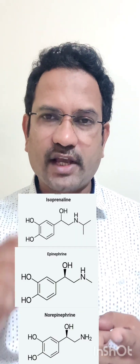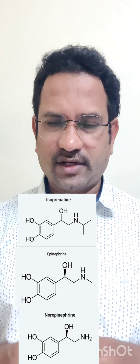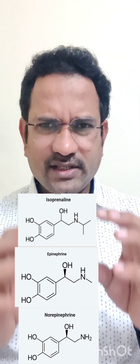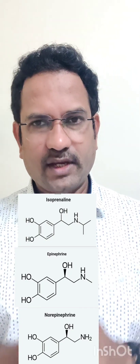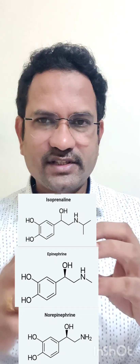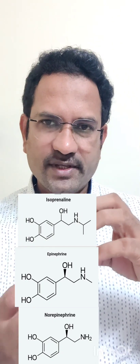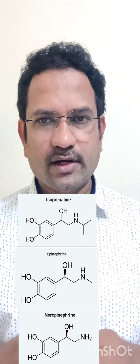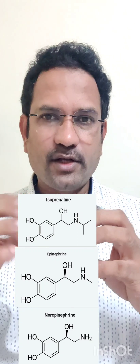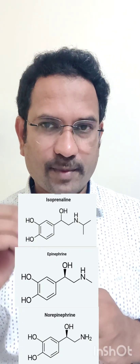In order to understand structure-activity relationship, we need to compare at least two or three drugs of the same class. Let us analyze three drugs: norepinephrine, epinephrine, and isoprinaline, which is also known as isoproterenol. When you see the structures, the difference is only at the amine end. In norepinephrine, only hydrogens are attached to the amine. In epinephrine, a methyl group is attached. In isoprinaline, an isopropyl group is attached.